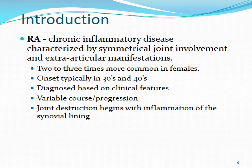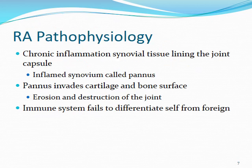In the earlier stages of RA, joint destruction begins with inflammation of the synovial lining. This chronic inflammation of the synovial tissue eventually leads to an inflamed capsule called a pannus, which invades the cartilage and bone surface, leading to erosion and destruction of the joint. The immune system fails to distinguish foreign antigens from self, and this unchecked inflammatory process causes self-damage.